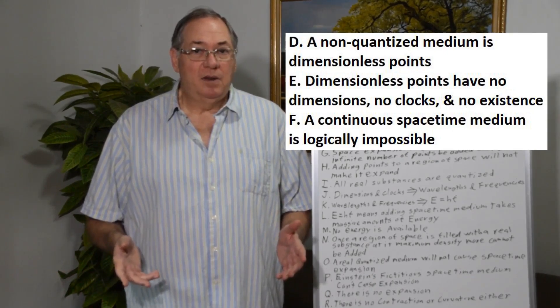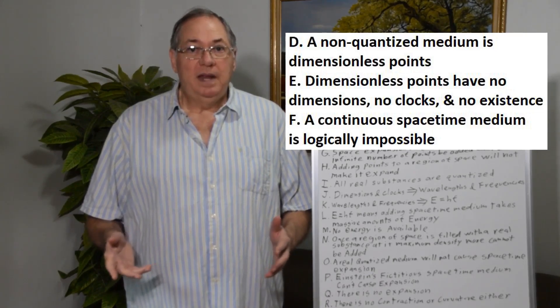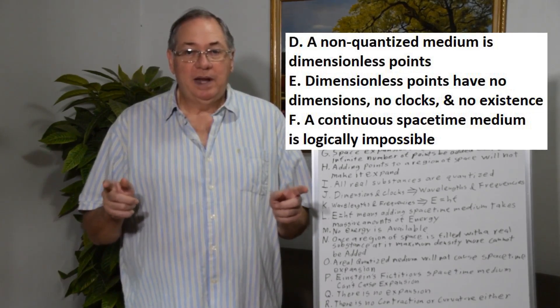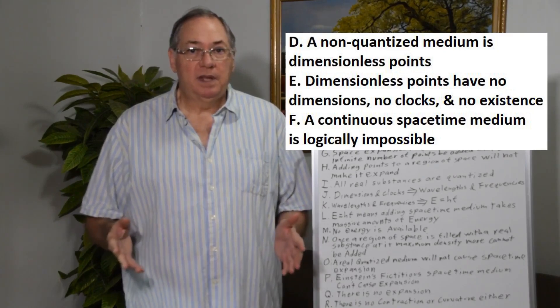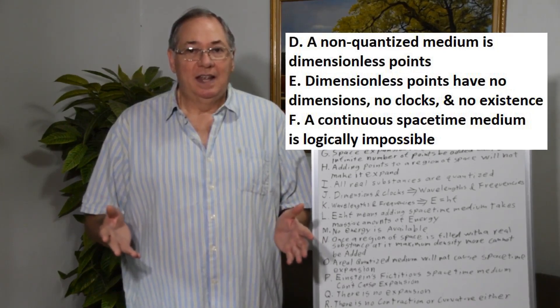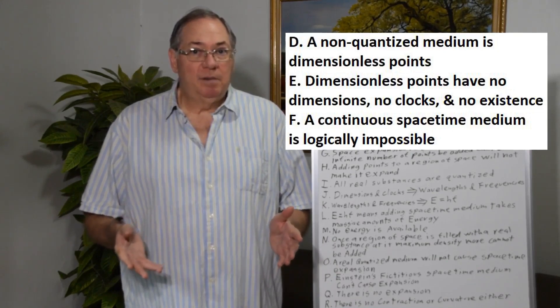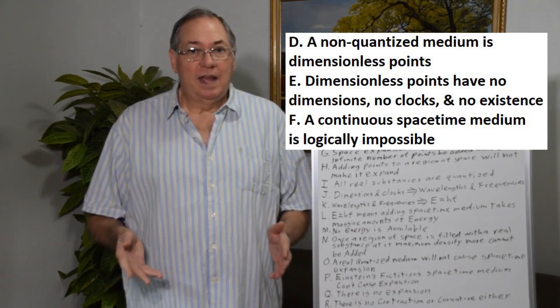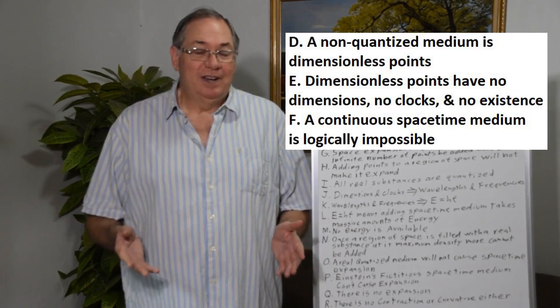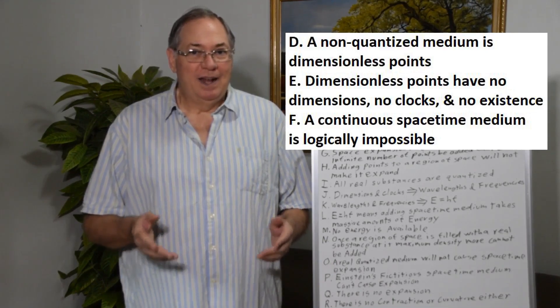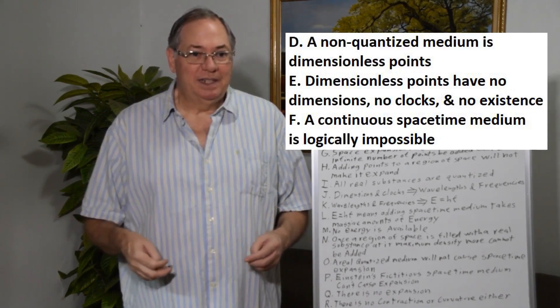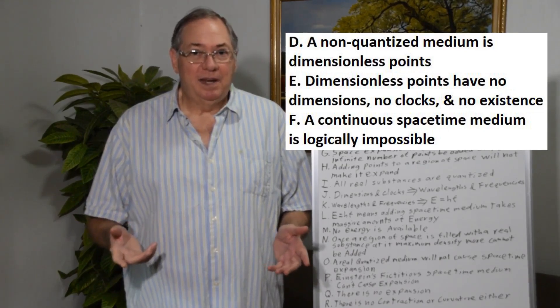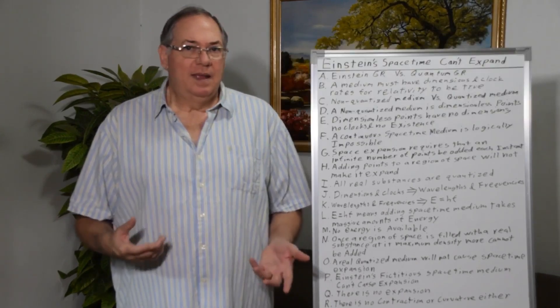So Einstein's model of an infinitely divisible medium, where you can have an infinite number of points on a line between any two points in order to make it smooth and continuous, can't exist. It was a good geometric experiment to begin with, and it's still fictitious today. That makes an obvious answer to the question of whether we have Einstein general relativity or quantized general relativity, because a non-quantized space-time medium is logically impossible.